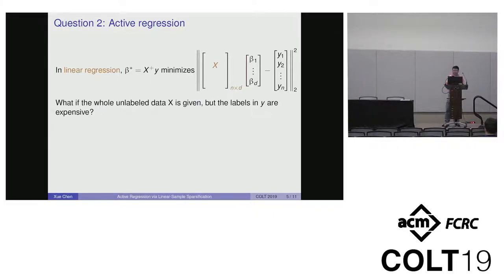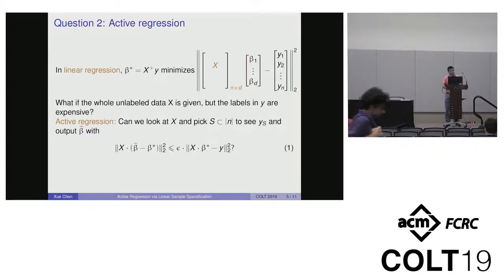This raises a natural question: consider the following scenario. What if we have the whole unlabeled data matrix X, but the labels in Y are expensive to query? Can we only look at X and pick a few entries in Y to query, say subset S, and produce a hypothesis beta tilde that is close to the true minimizer?